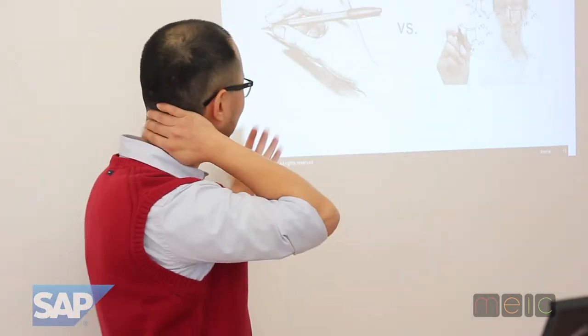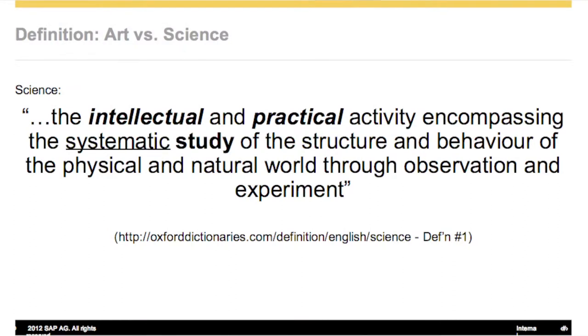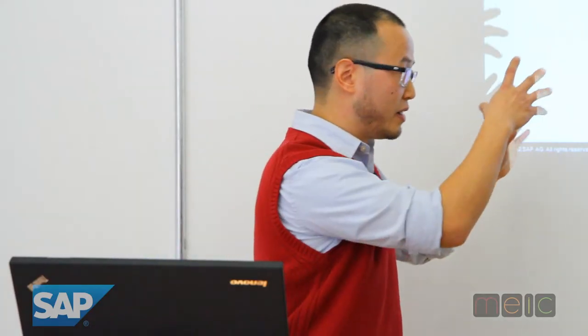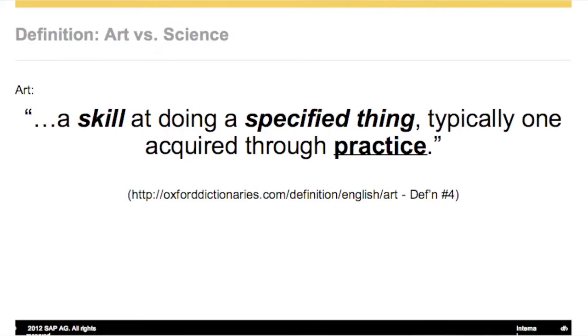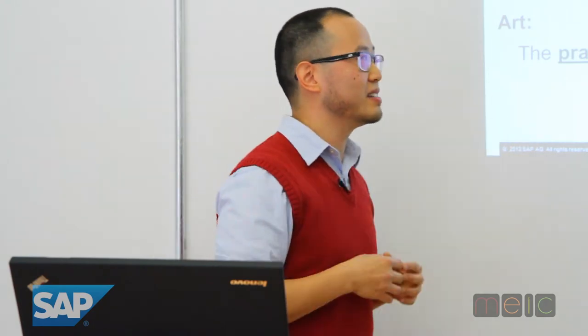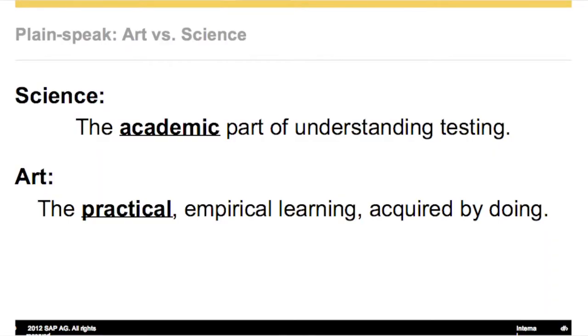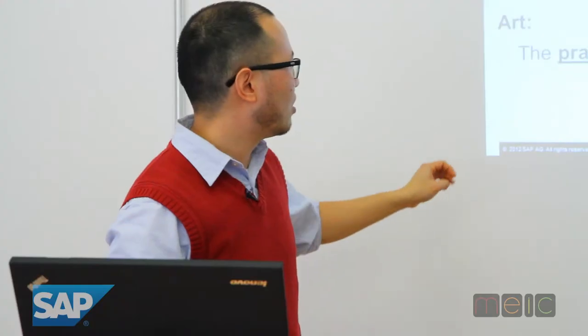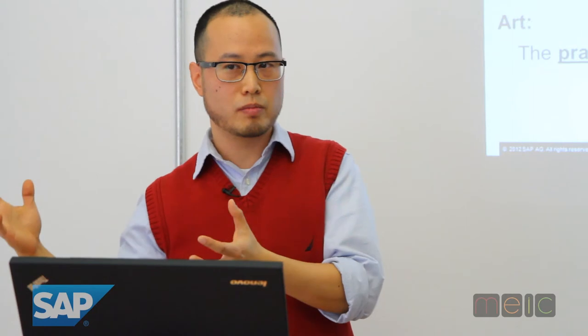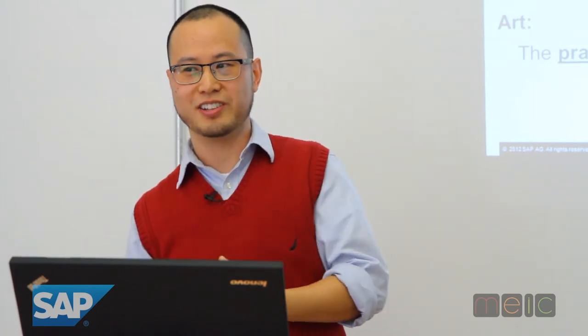So let's talk a little bit about art versus science — this is kind of my view of it. Oxford Dictionary says science is 'the intellectual and practical activity encompassing the systematic study of the structure and behavior of the physical and natural world through observation and experiment.' Oxford's definition of art — I picked the fourth one — is 'a skill at doing a specified thing, typically one acquired through practice.' In plain speak, when I talk about art versus science, science means the academic understanding — how do we get that in your head? Art is more the practical, empirical learning experience. So I'm going to try to give you both the theoretical knowledge and the practical experience logic that I didn't know until I actually did it.